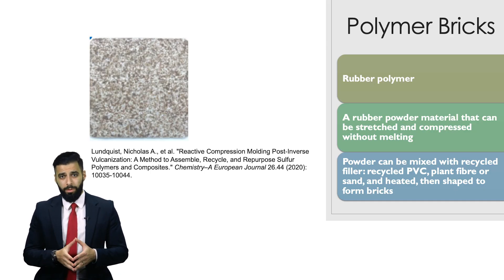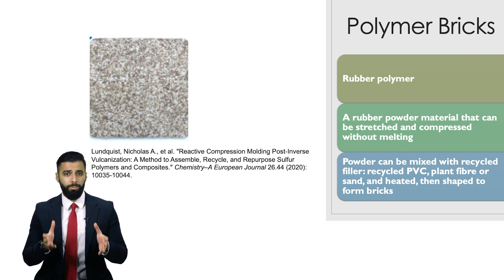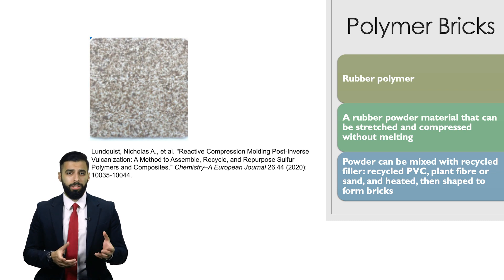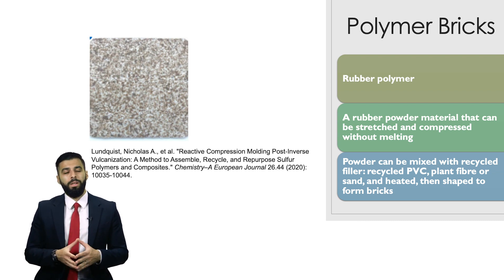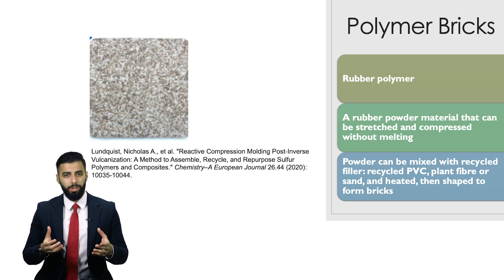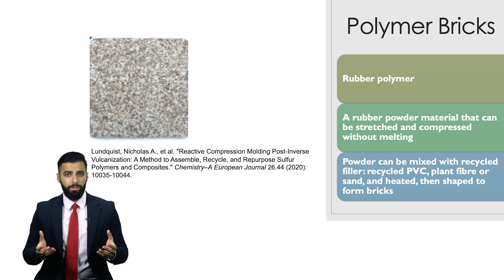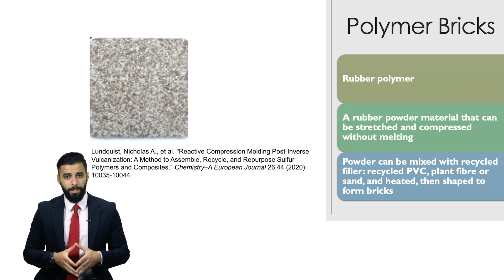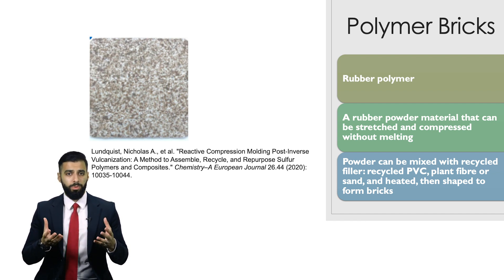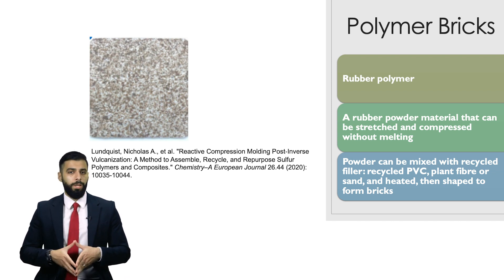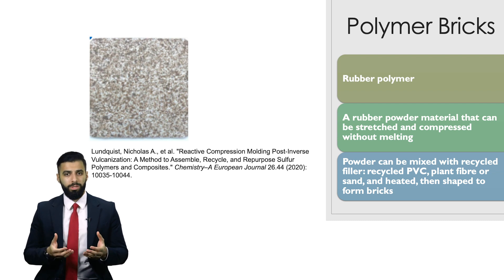The first sustainable material we'll look at is the recyclable plastic brick. This is made from a rubber polymer composed of a mixture of sulphur and canola oil. This mixture forms a rubber powder that can be stretched and compressed without melting — a process referred to as reactive compression moulding. This powder can be mixed with recycled plastic, such as recycled PVC, which is a common synthetic plastic polymer used in pipes in construction, along with plant fibre or sand, heated and then shaped into a brick.